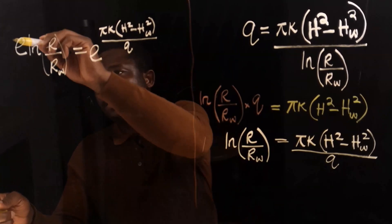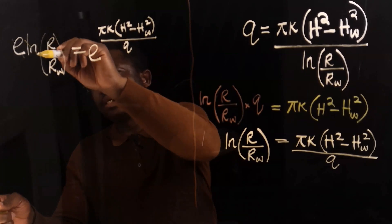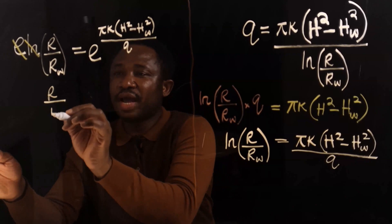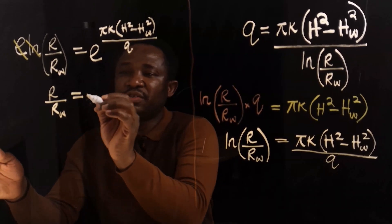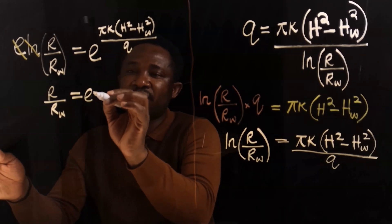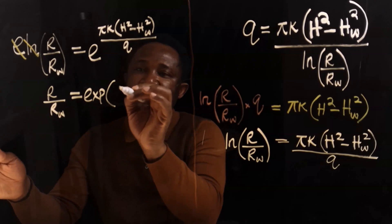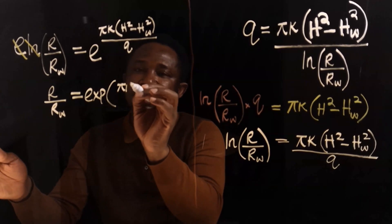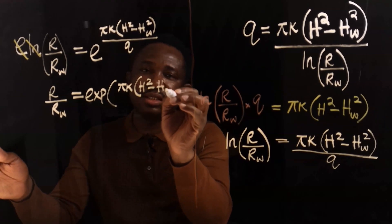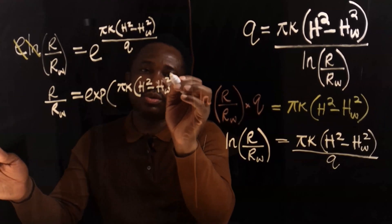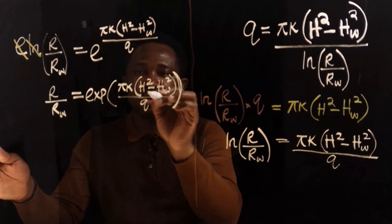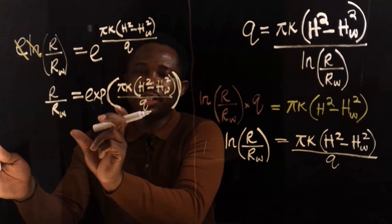This exponential will now neutralize this natural log, and R divide R subscript W is now free. And on this side, we have exponential of pi K, in bracket, H squared minus H subscript W squared, all over Q. All these will be enclosed with this exponential.